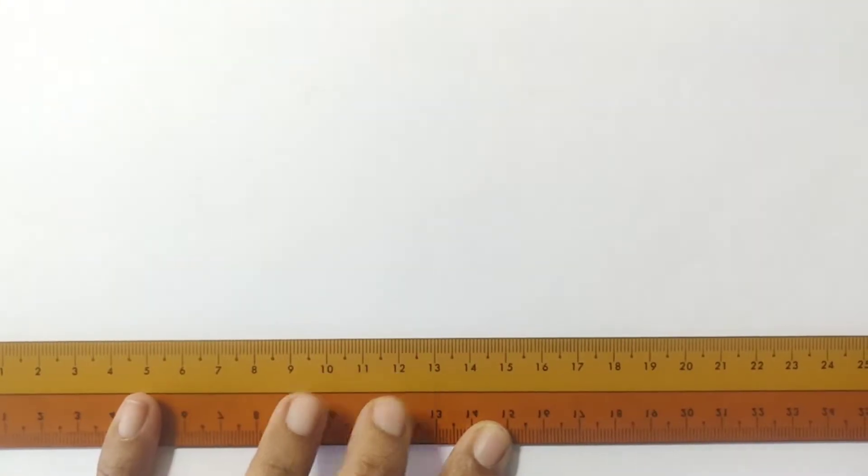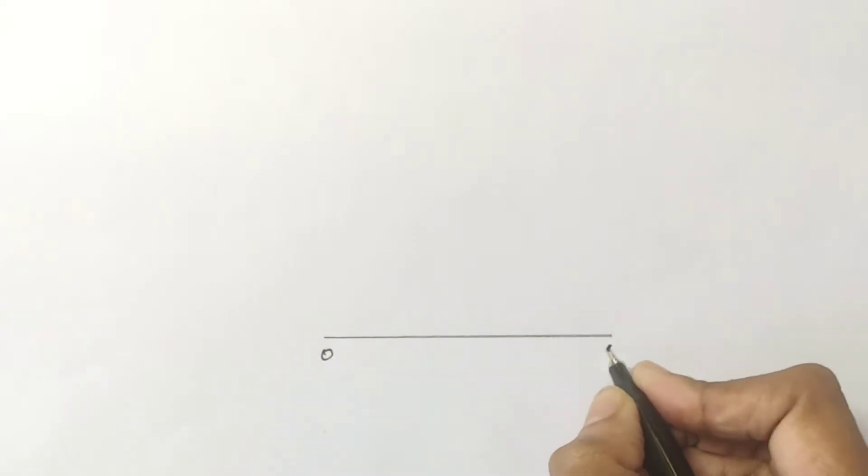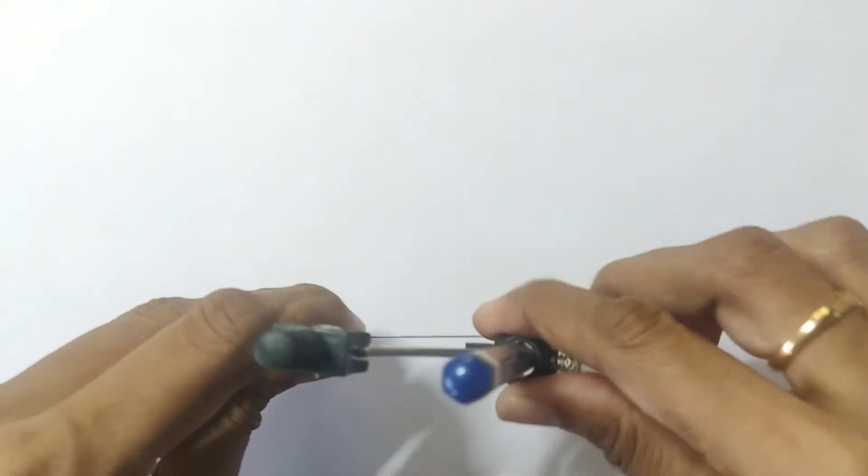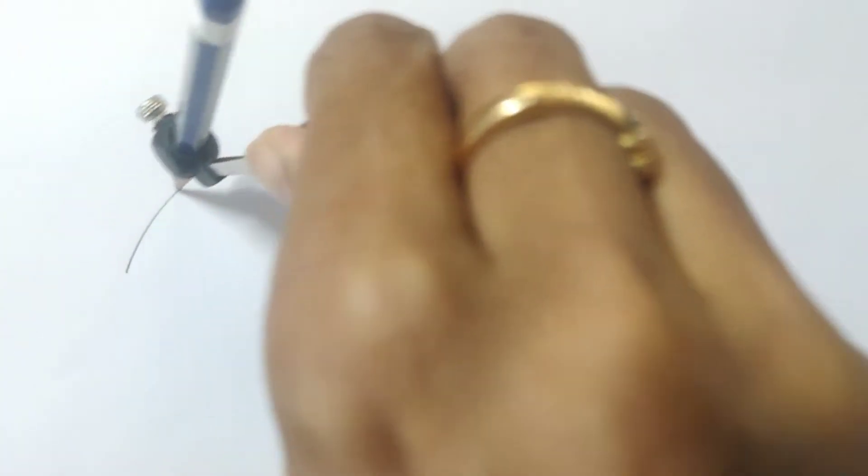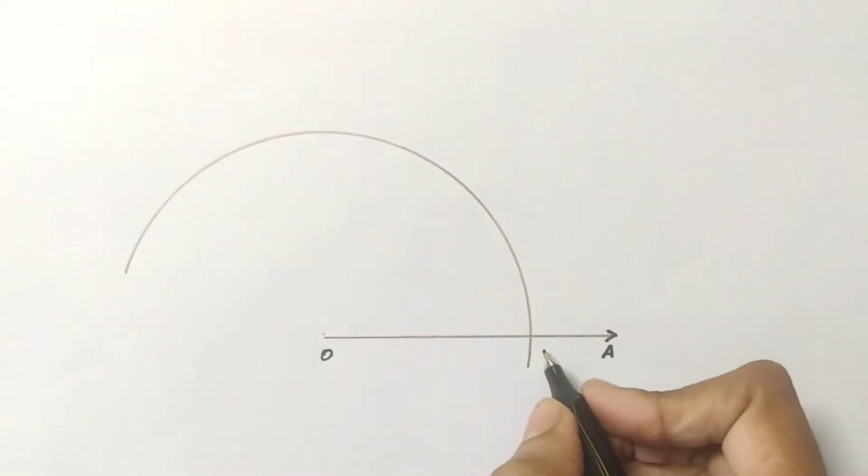Draw a ray OA. With O as center and more than half the length of OA as radius, draw an arc in the form of a semicircle. Let's label the arc as MN.